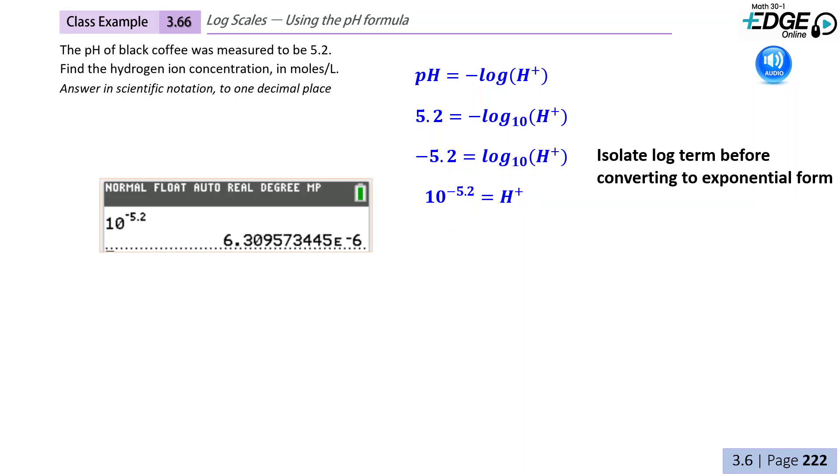Put this into your calculator and we get 6.3. Remember, the e means times 10 to the power of negative 6.